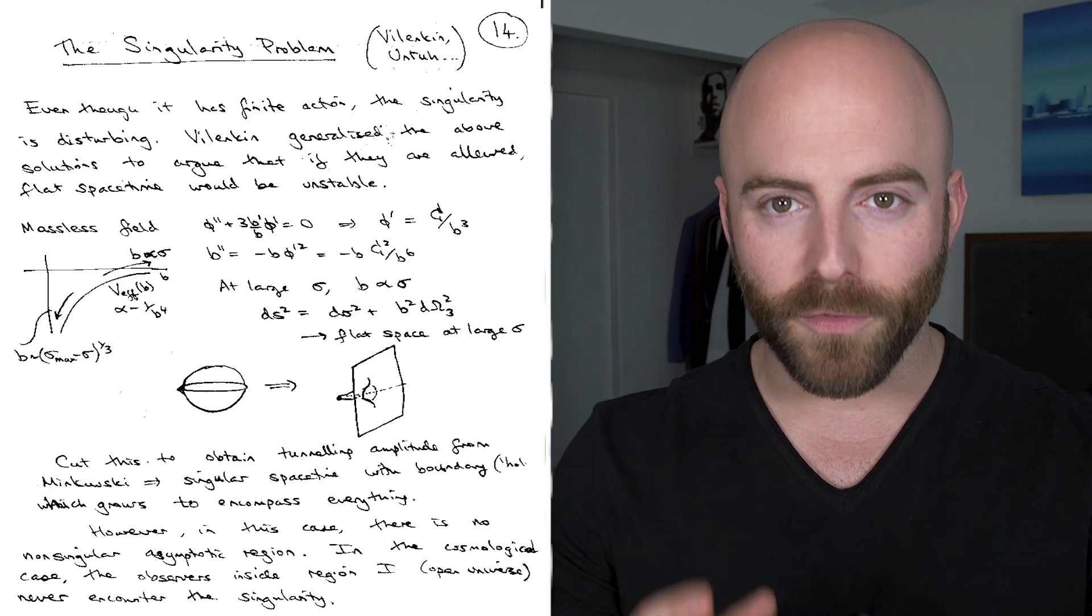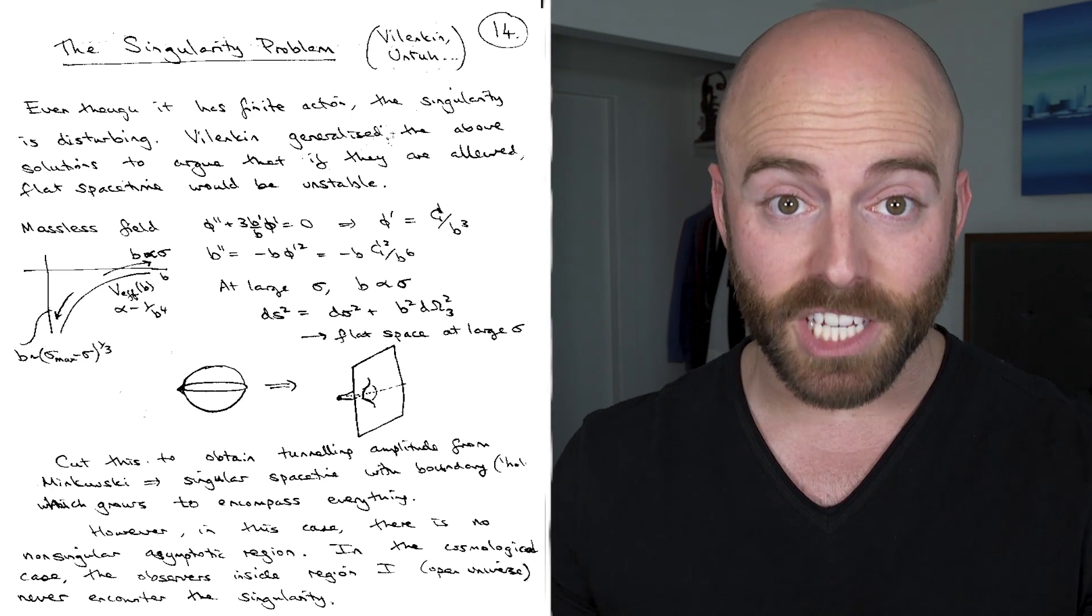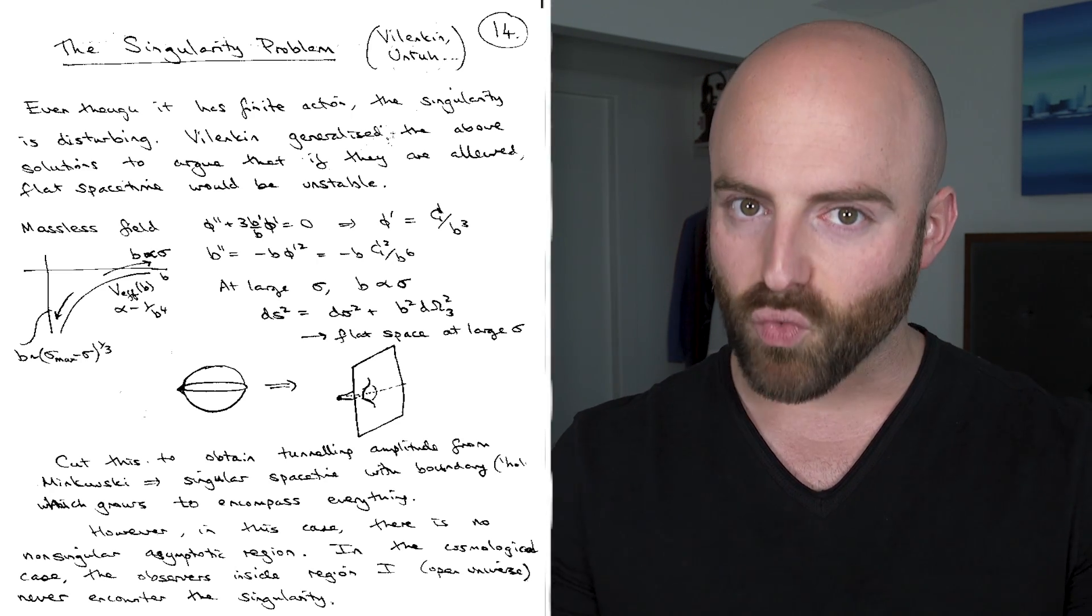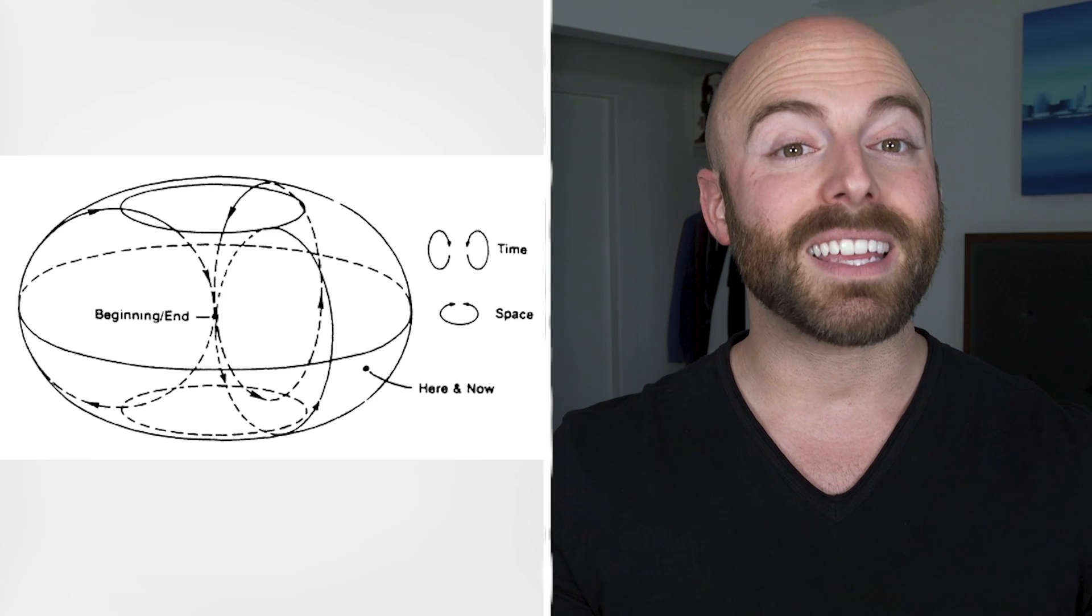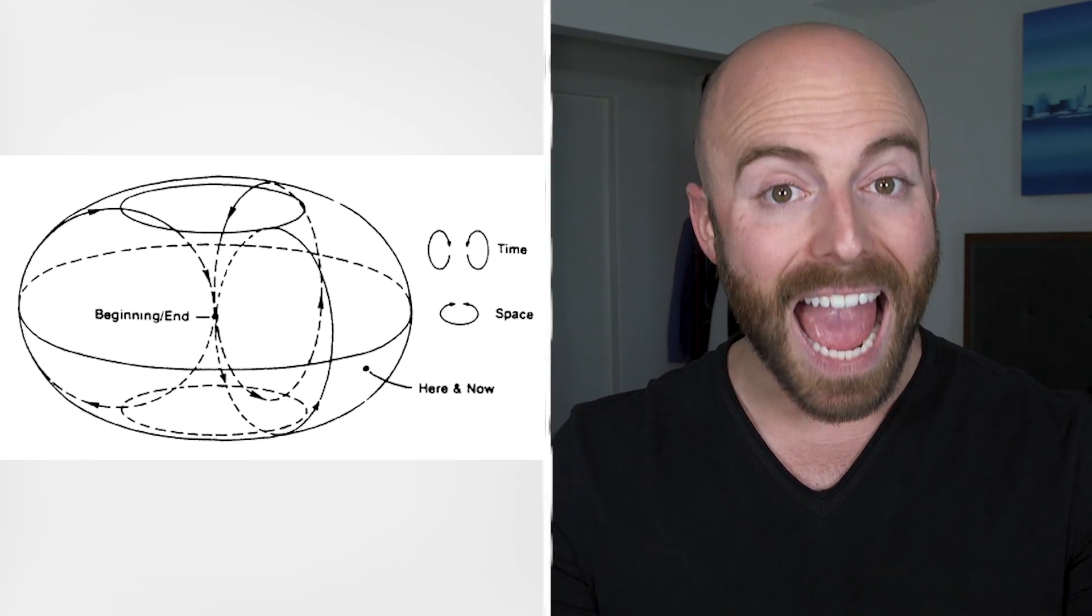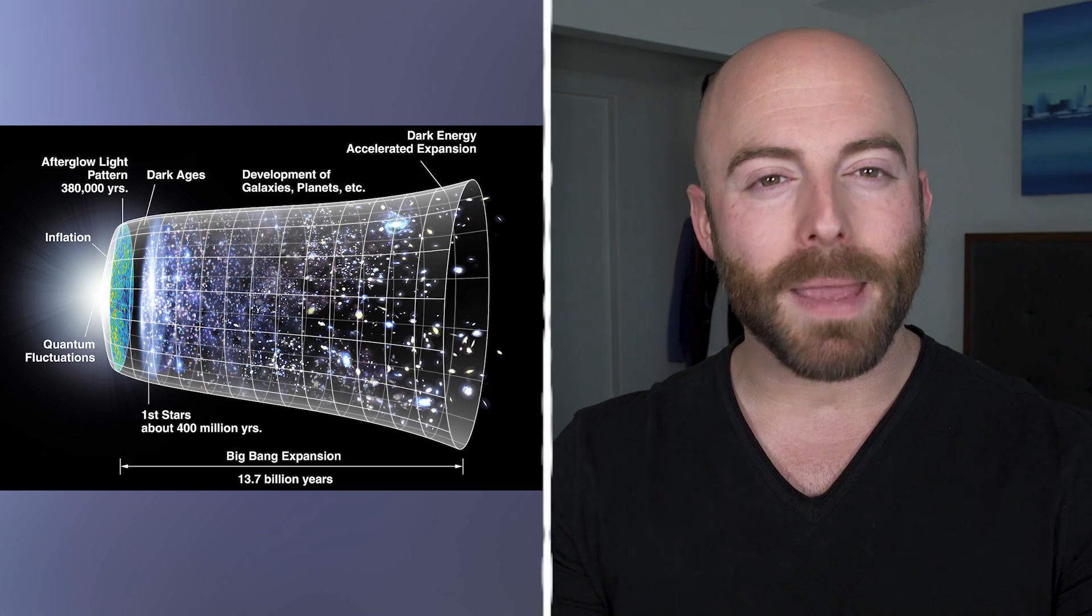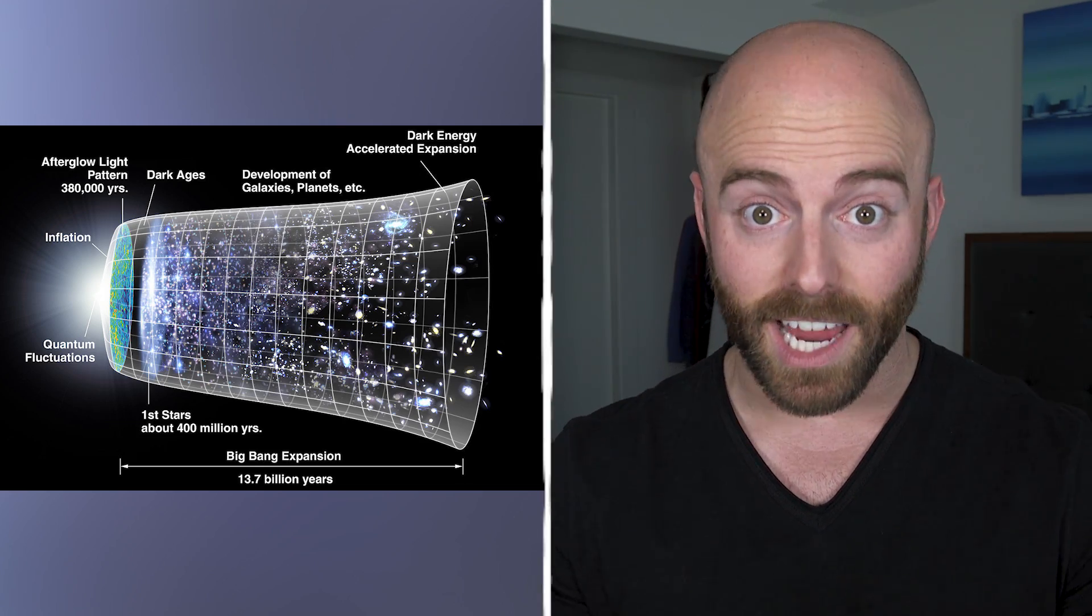A singularity or point of infinity is often seen by mathematicians as a sign that something is wrong with a theory. The argument being that infinity isn't something that can actually occur in nature. It's simply a concept mathematicians and scientists use when a theory reaches a point where the mathematics break down. At the core of the black hole, it may be that there is no true singularity.